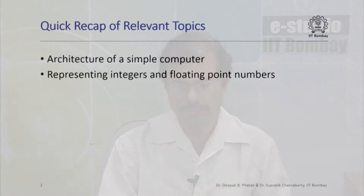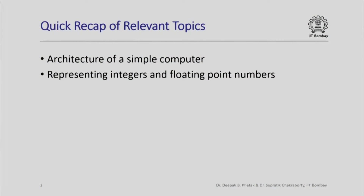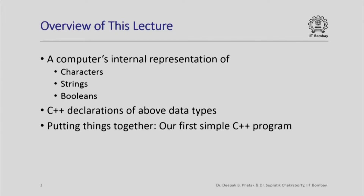In this lecture we are going to see how characters, strings and Booleans are represented inside a computer. Here is a quick recap of relevant topics that we have already discussed in earlier lectures. We have seen the architecture of a simple computer and how integers and floating point numbers are represented. In this lecture we will also put things together and take a glimpse at our first simple C++ program.